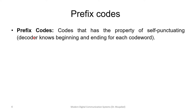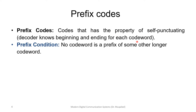Prefix codes are codes that have the property of being self-punctuating — the decoder knows the beginning and end of each codeword. The prefix condition states that no codeword is a prefix of some other longer codeword.